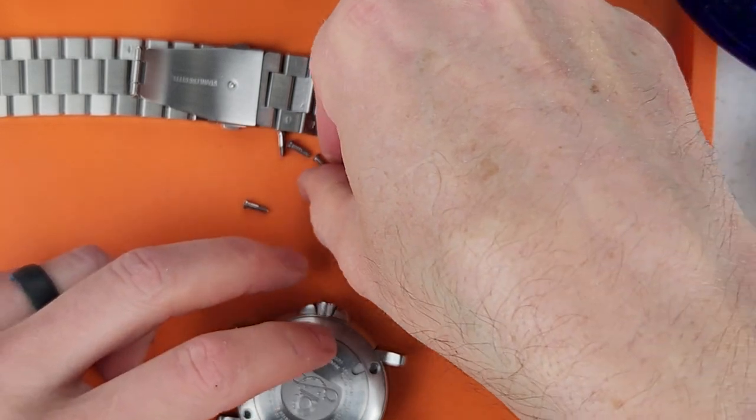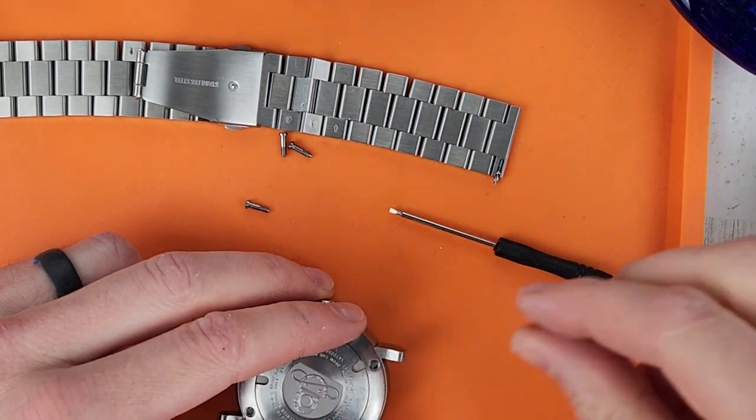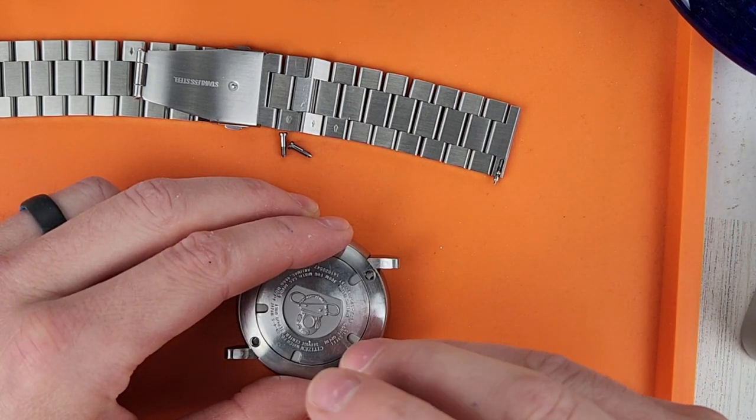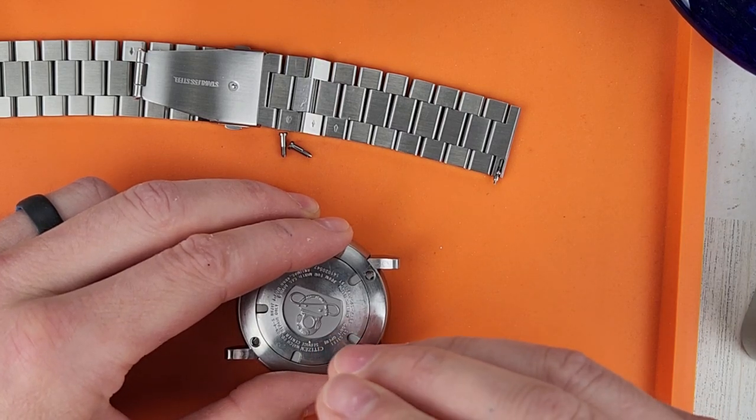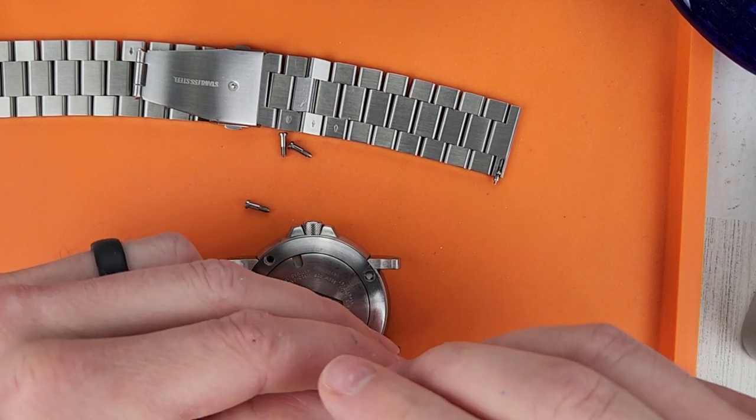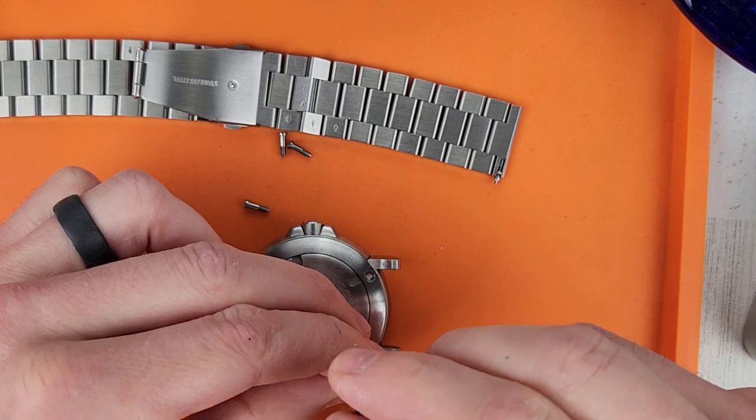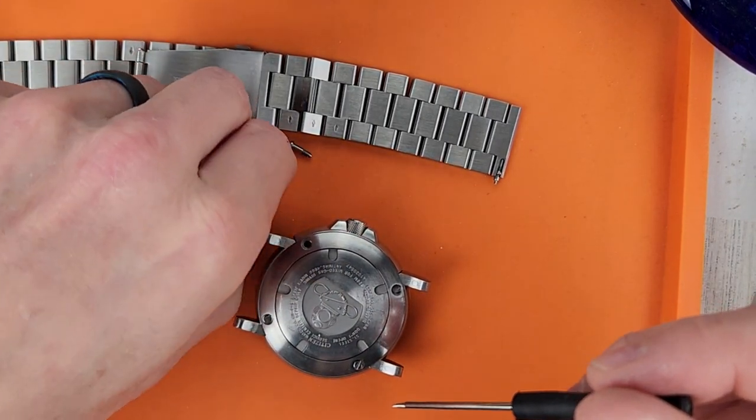So again, I'm not going to show you every screw getting screwed back in. Screwdriver is a little small, but it still works. Okay, I just like to screw the screw backwards so I hear the click and then go ahead and screw it the right way. Righty tighty, lefty loosey, just to try to prevent cross threading.